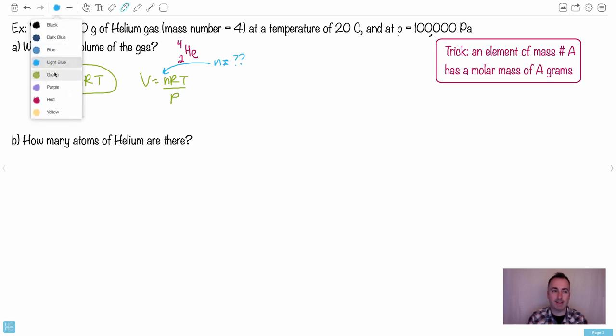It's a nice trick to know: if you have an element of mass number A, in this case 4, then it's going to have a molar mass of A grams. What that means is that one mole of that material will be 4 grams.